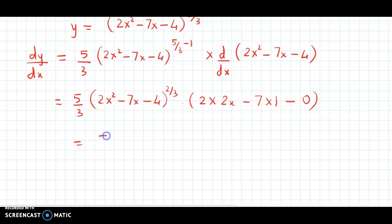Finally, we get 5 by 3 times 2x squared minus 7x minus 4 raised to 2 by 3, times 4x minus 7. This is the value for dy by dx.